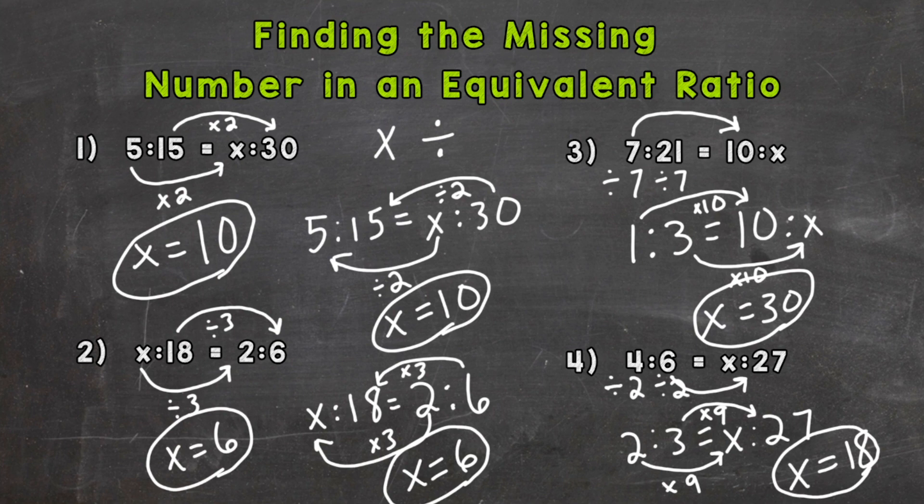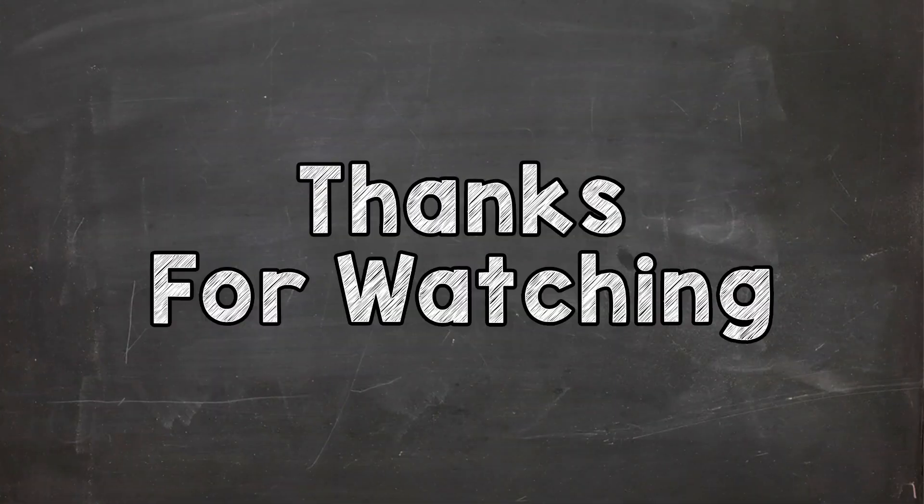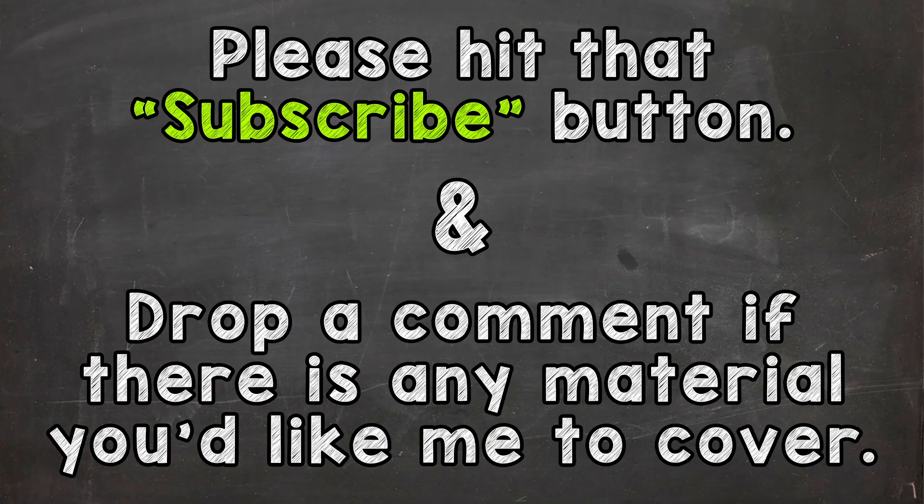So there you have it. There's how you find the missing number in an equivalent ratio. Hopefully that helped. Thanks so much for watching. Until next time, peace.